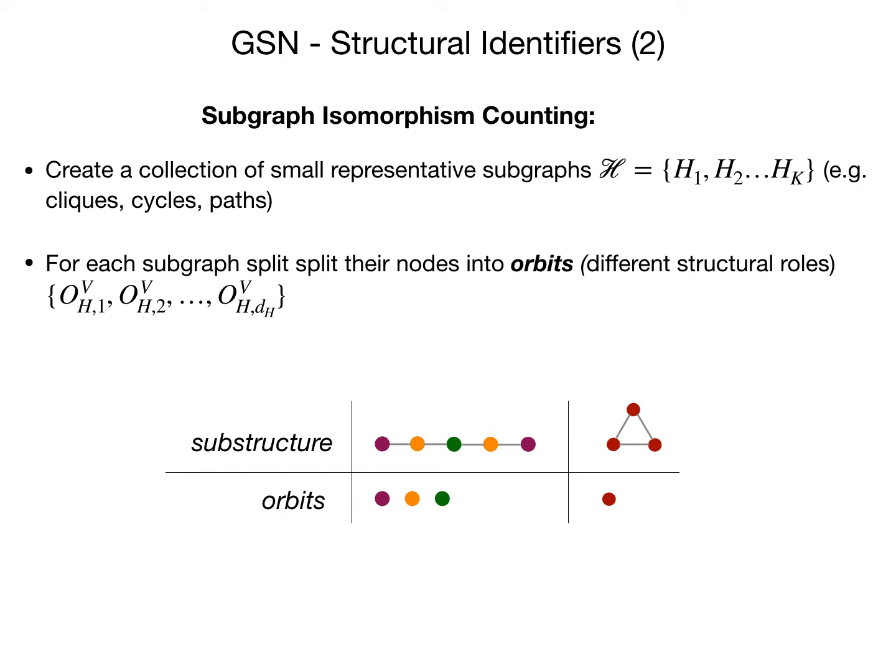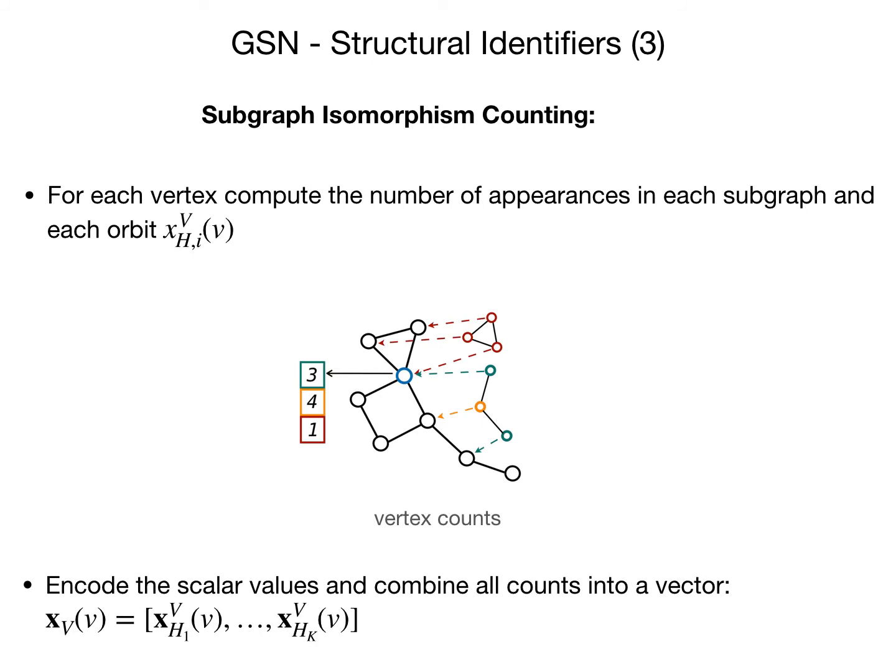In detail, the algorithm is called subgraph isomorphism counting and it goes as follows. First, we collect a small set of representative subgraphs — these can be cliques, cycles, or whatever kind of substructure. Then, for each one of these subgraphs, we split their nodes into orbits. Intuitively, orbits reflect different structural roles. For example, the endpoints of a path belong to the same orbit, or when it comes to a triangle, all nodes belong to the same orbit. Then I look for these orbits in the graphs at hand — for example, how many times a node appears as part of a triangle, as the endpoint of a three-node path, or as the middle point of a three-node path. I encode all these scalar count values into one-hot encodings and then combine them into a single vector that yields the structural identifier.